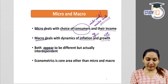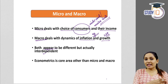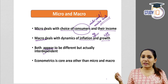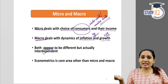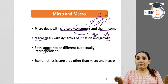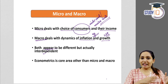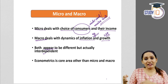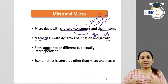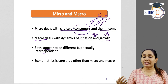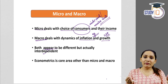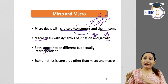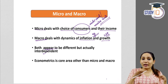Although micro and macroeconomics appear different, they are interdependent. For example, microeconomics studies individual income, and all individual incomes put together make national income — which is a macroeconomic concept. All micro units in an economy put together form the macro economy. Therefore, it is important to study both and understand the correlation between them.